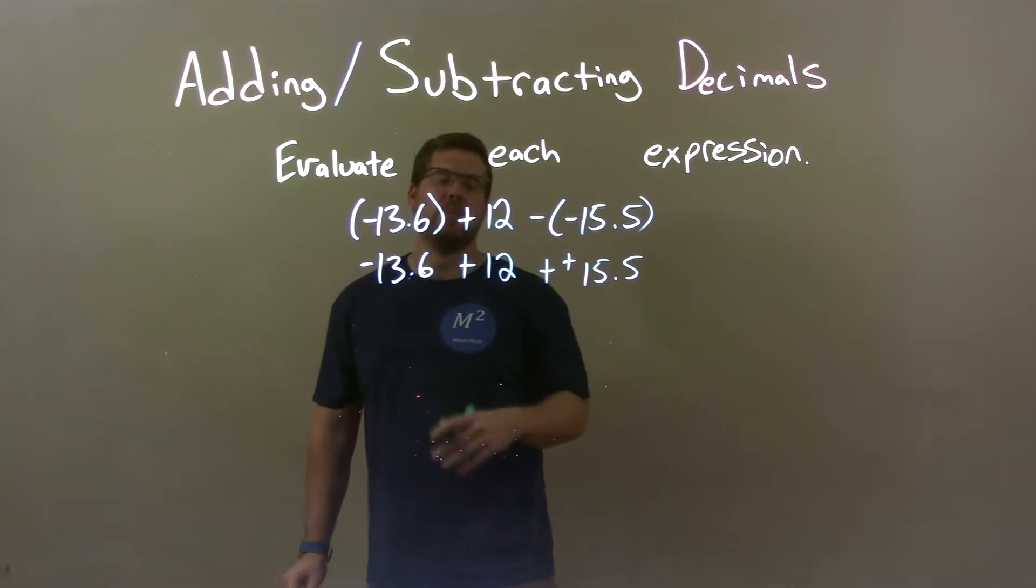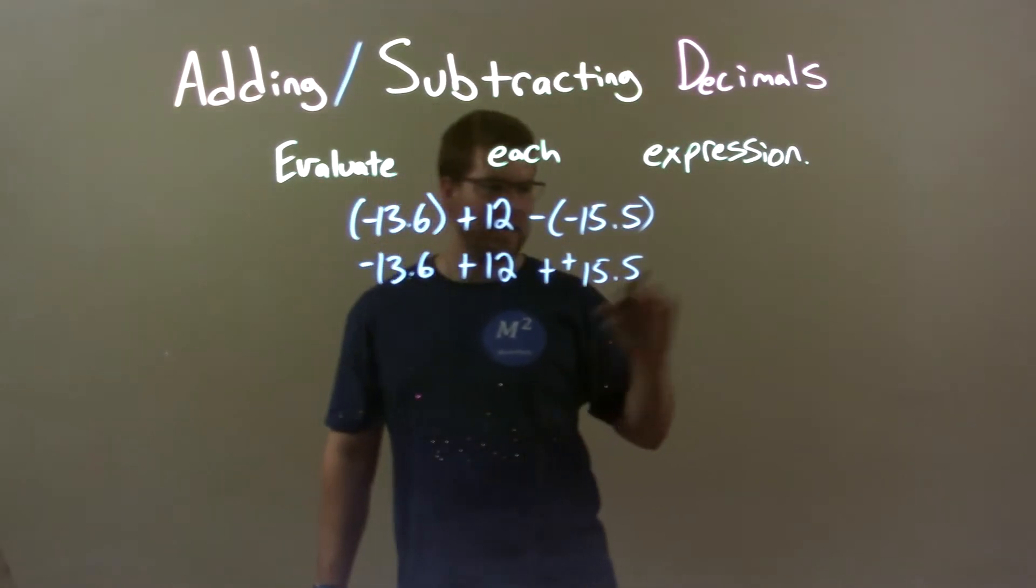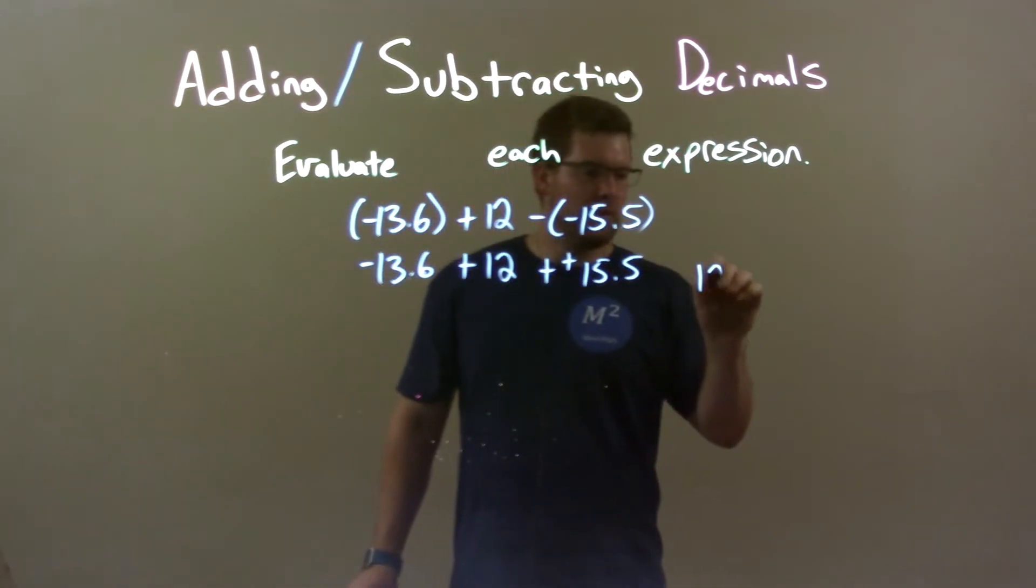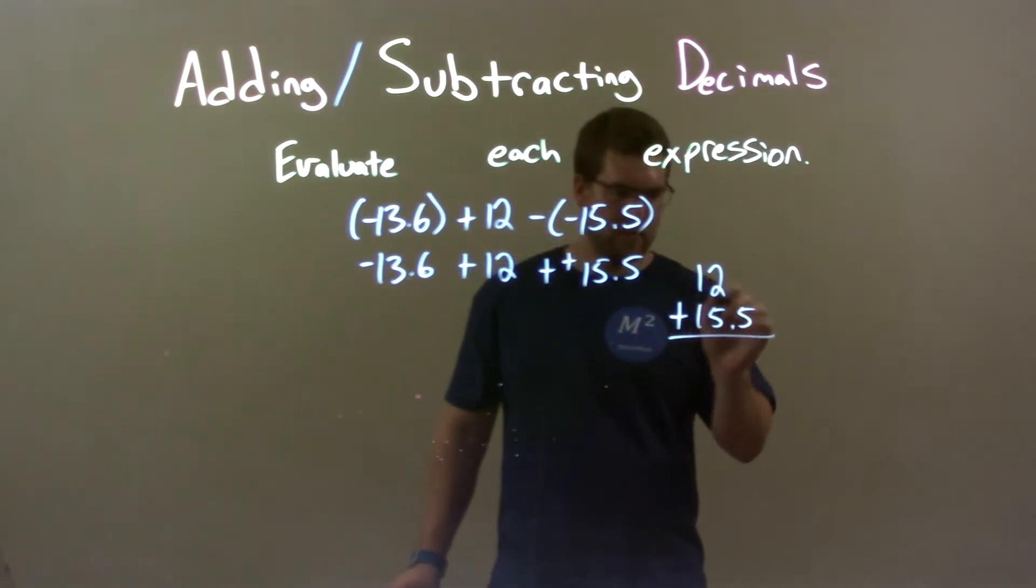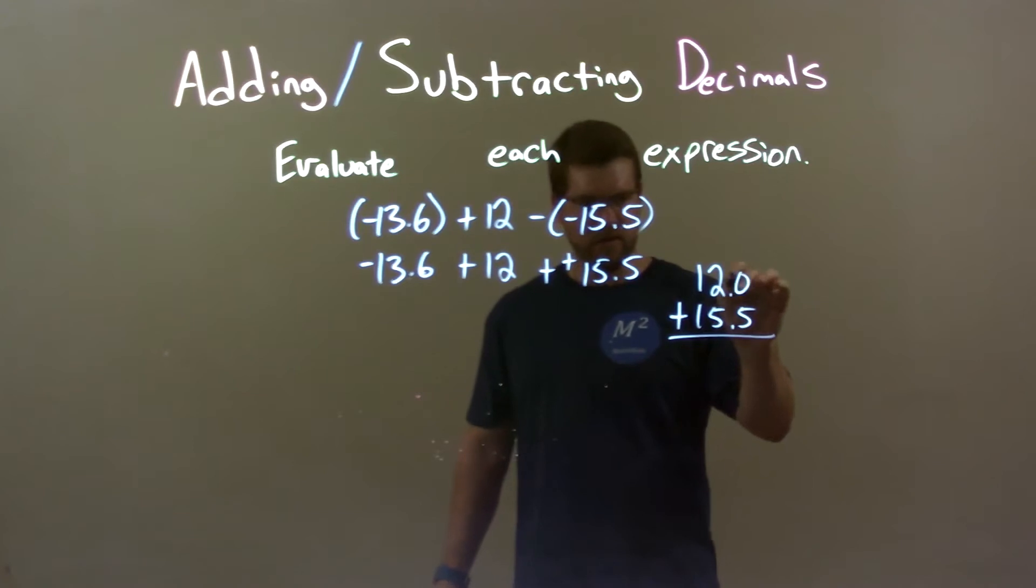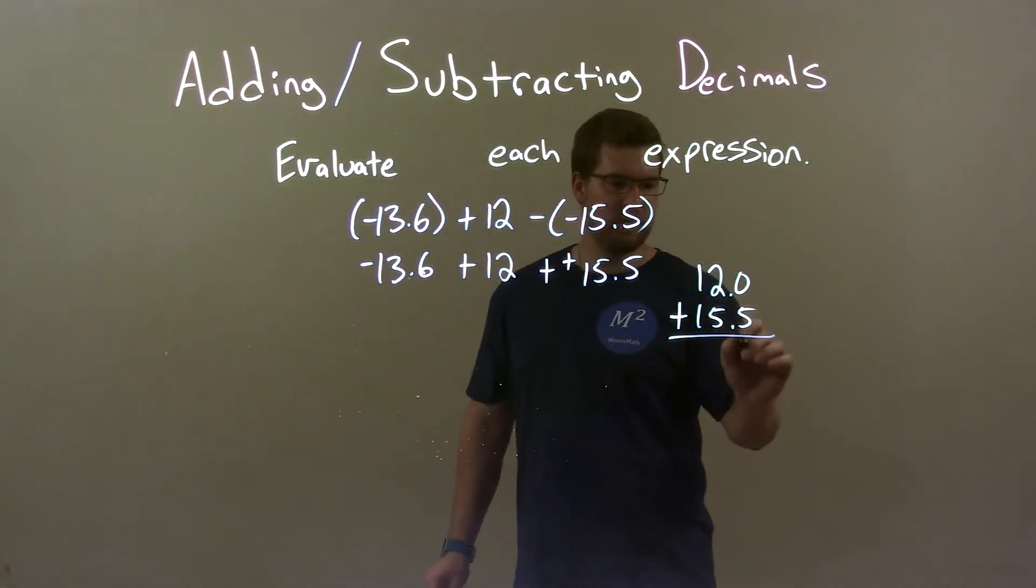Since these two numbers are positive, I'm going to add them together first. I'm going to deal with that on the side here. 12 plus 15.5. Make sure the decimal points line up. We have 12.0. Zero plus five is five. The decimal point comes down. Two plus five is seven. One plus one is two.